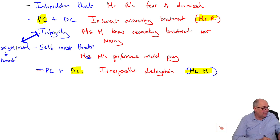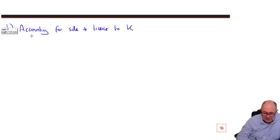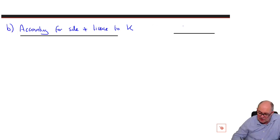The next part, part B, is worth five marks. And it is accounting for the sale of a license to a company beginning with K. I'll just call it K. And that's worth five marks. Now, I thought this was hard. I was a bit confused about trying to understand exactly the scenario.